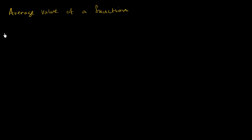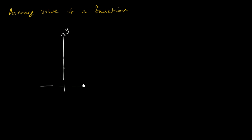What I want to do in this video is think about the idea of an average value of a function over some closed interval. So what do I mean by that, and how can we think about what average value of a function even means? So let's say that's my y-axis, and this right over here is my x-axis, and let me draw a function here.